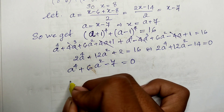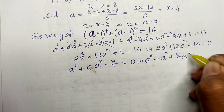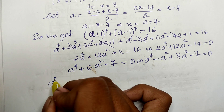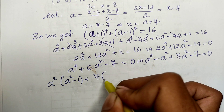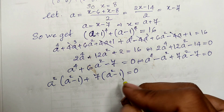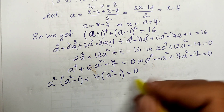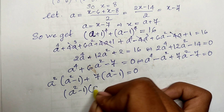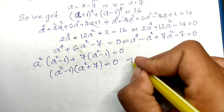Moving 16 to the left side: 2a⁴ plus 12a² minus 14 equals 0. Dividing both sides by 2: a⁴ plus 6a² minus 7 equals 0. We can factor this as a⁴ minus a² plus 7a² minus 7 equals 0, then factor by grouping: a squared times (a squared minus 1) plus 7 times (a squared minus 1) equals 0.